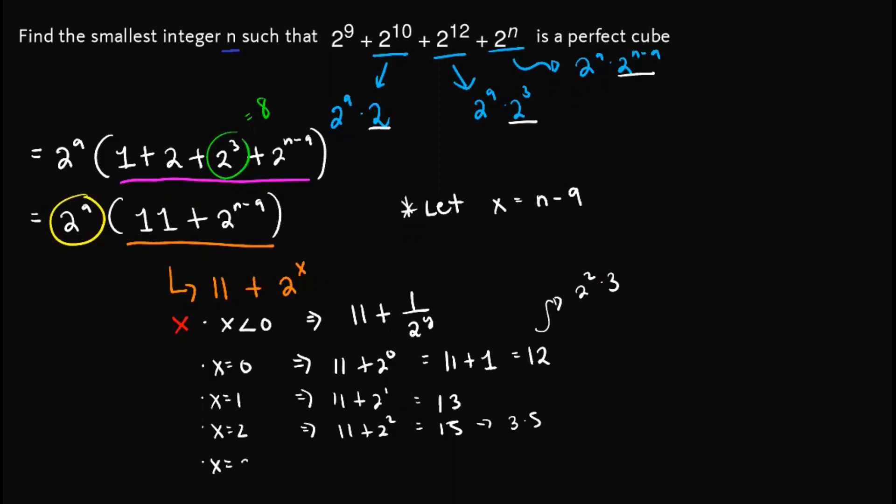If x is equal to 3, then we have 11 + 2^3, which is equal to 11 + 8, or 19, which, again, is not a perfect cube since 19 is a prime number.